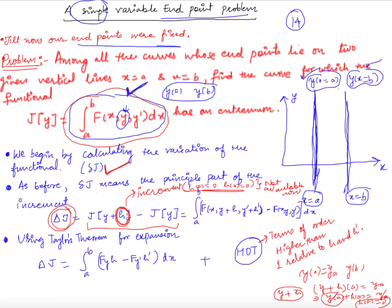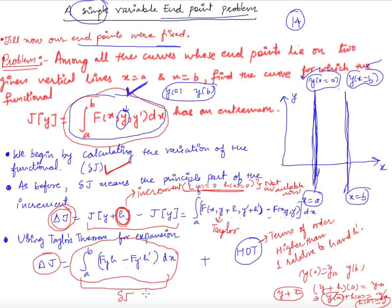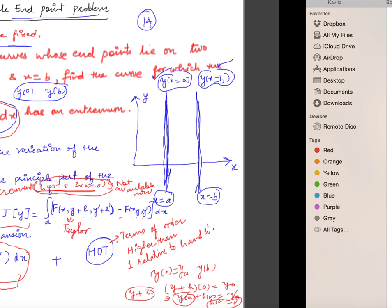So δJ equals J(y+h) minus J(y), which is the integral from a to b of [f(x, y+h, y'+h') minus f(x, y, y')] dx. Using Taylor's expansion and manipulation, we get the increment as the integral from a to b of [f_y · h + f_{y'} · h'] dx plus higher order terms. Comparing with the definition of variation, this integral is the variation. We don't have the conditions on h that we had earlier.